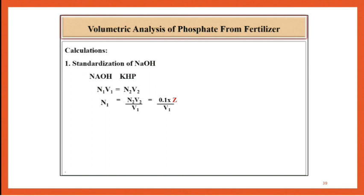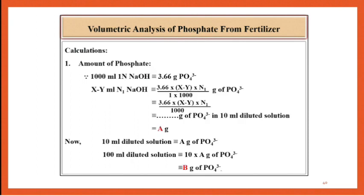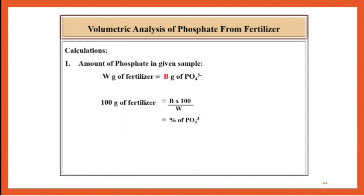Calculations for standardization of NaOH (NaOH against KHP): N1·V1 = N2·V2, so N1 = (N2·V2)/V1 = (0.1 × Z)/V1. Calculations for amount of phosphate: 1000 ml of 1 normal NaOH corresponds to 3.66 g of phosphate. Therefore, (X−Y) ml of N1 NaOH corresponds to 3.66 × (X−Y) × N1 / 1000 = A grams of phosphate. Since 10 ml diluted solution corresponds to A grams, 100 ml contains 10 × A = B grams. Therefore, % phosphate = (B × 100) / W.